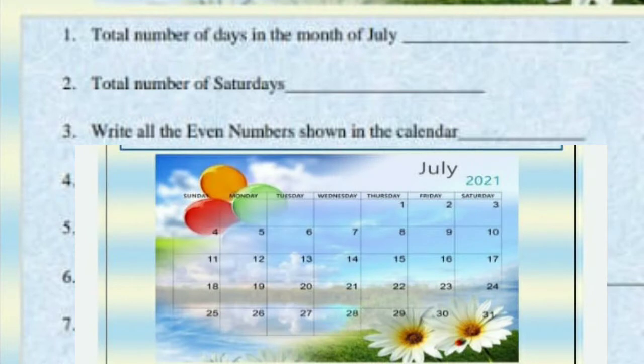In the calendar of July month, you have to answer the questions. First: total number of days in the month of July. See in the calendar — 31 days.